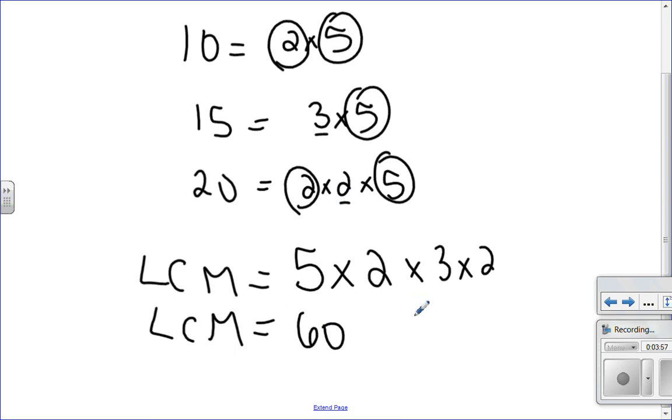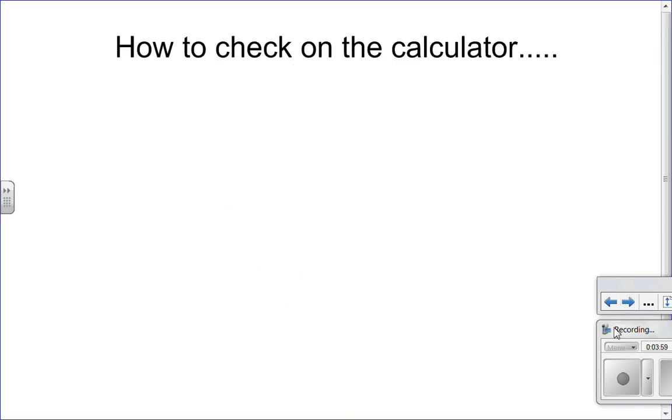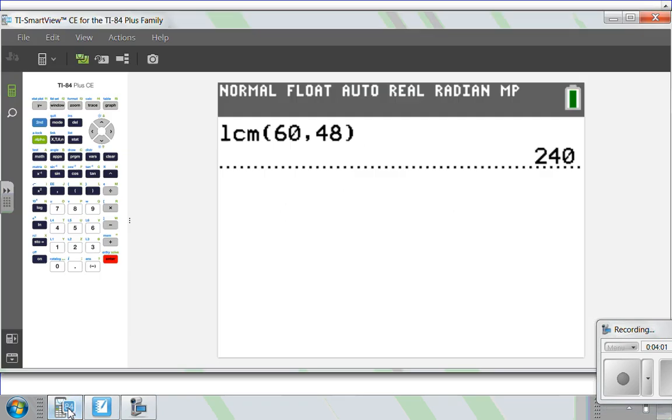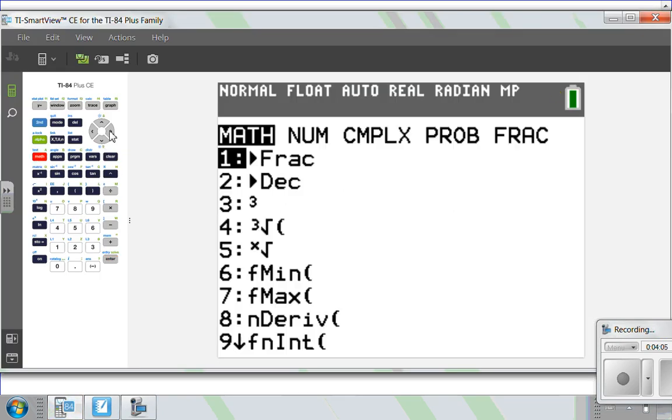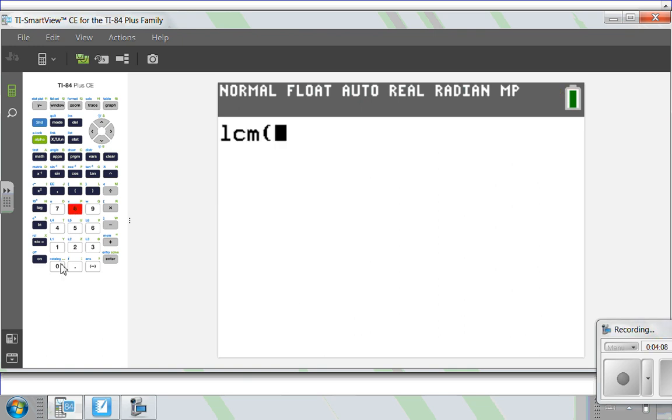So again, let's check this on the graphing calculator. So let's try again. We're going to go into math, over to number, down to LCM, and I want to do 10, 15, commas in between, and 20. Okay, close my bracket, and what do I get?